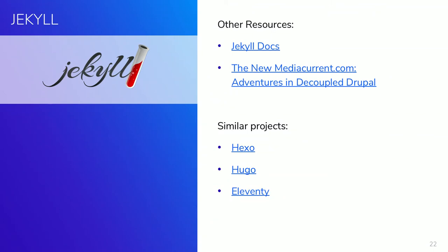Additional resources: the Jekyll docs are great. MediaCurrent has a blog post, and I believe their current site is a Jekyll and Drupal project. There are also similar projects: Hexo is a Node static site generator, Hugo is a Go-based option and supposedly super fast, and Eleventy is another Node generator that's really stripped down and simplified — I've been hearing a lot about it recently.